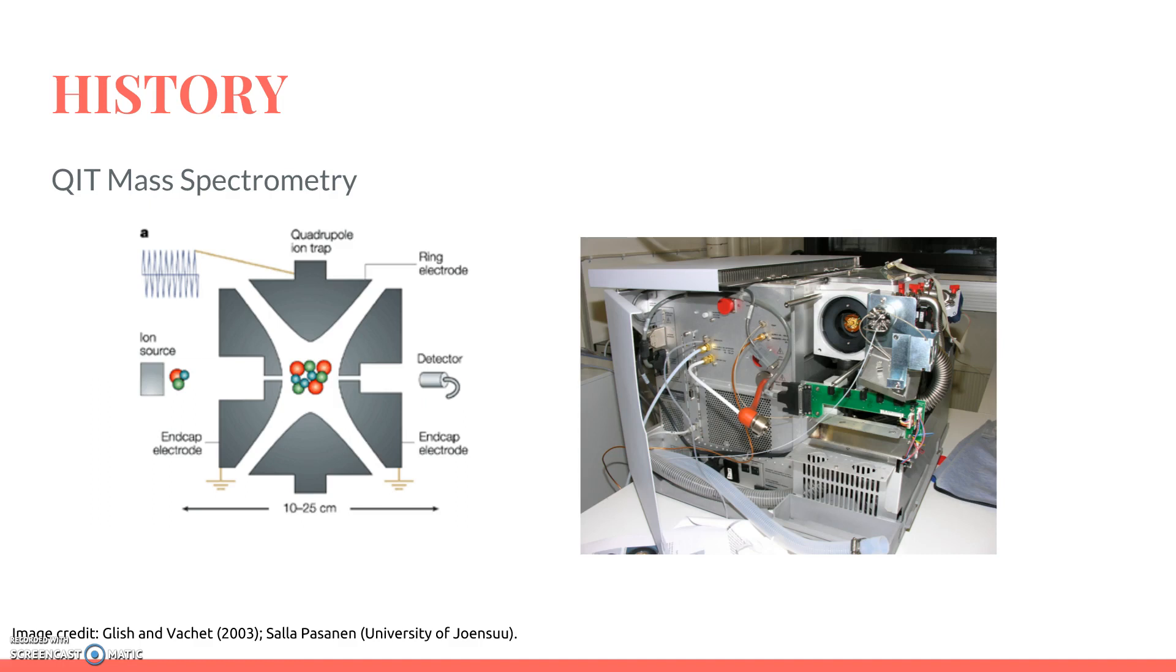Then, the ion trap voltage is varied slowly, so that after some time, ions will begin to escape the trap. The lightest ions will be the first to escape, and so by linking the ion trap to some detector, it is therefore possible to do mass spectrometry.